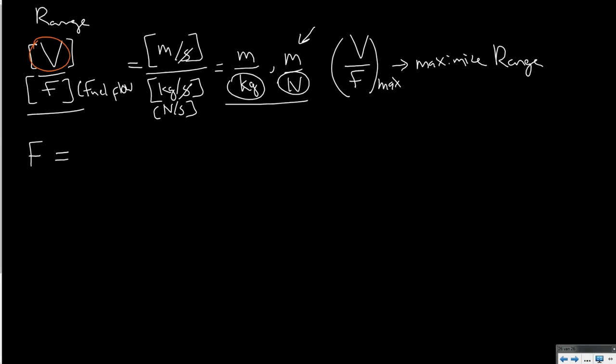By definition, we state that fuel flow is some kind of a parameter Cp, which we call the power-specific fuel consumption, multiplied with PBr. And Br stands for brake. So, what does that mean, PBr? Now, let us look at a given propeller engine. We have a propeller. We have some kind of engine. It doesn't really matter what kind it is.